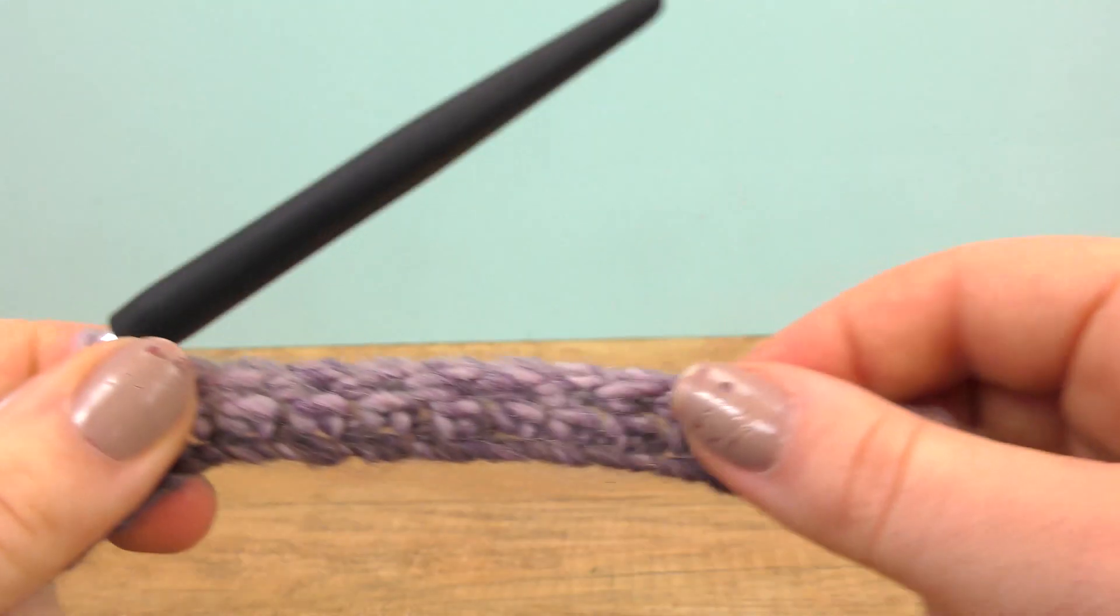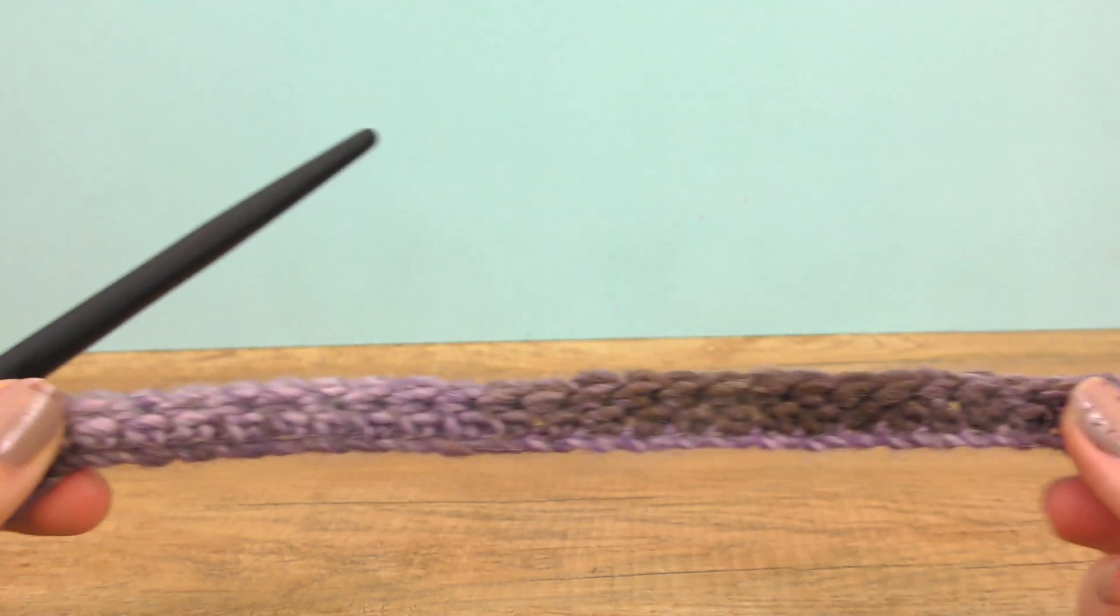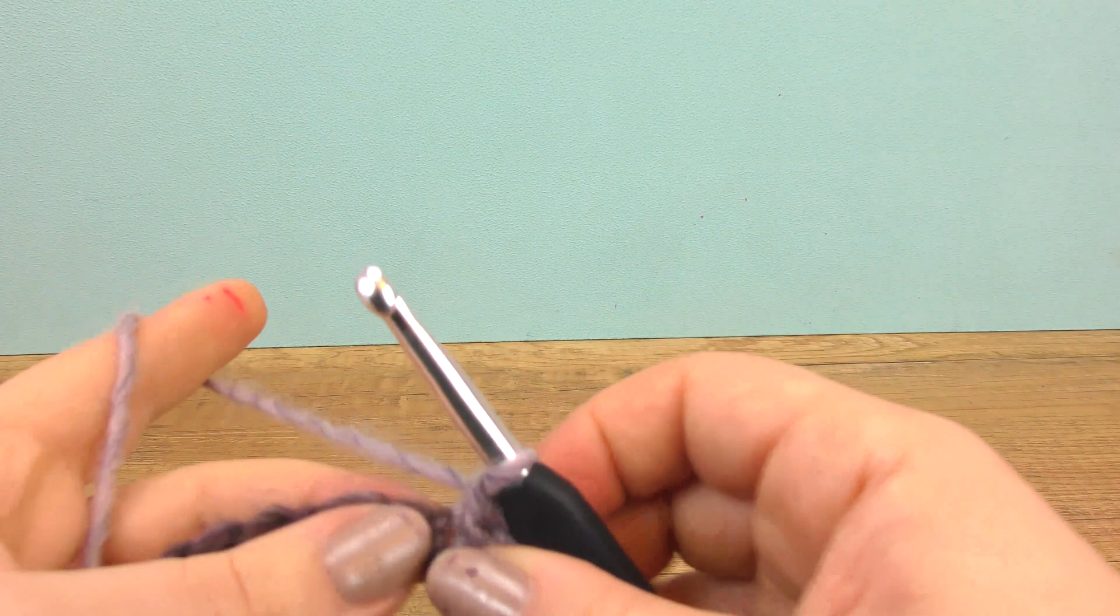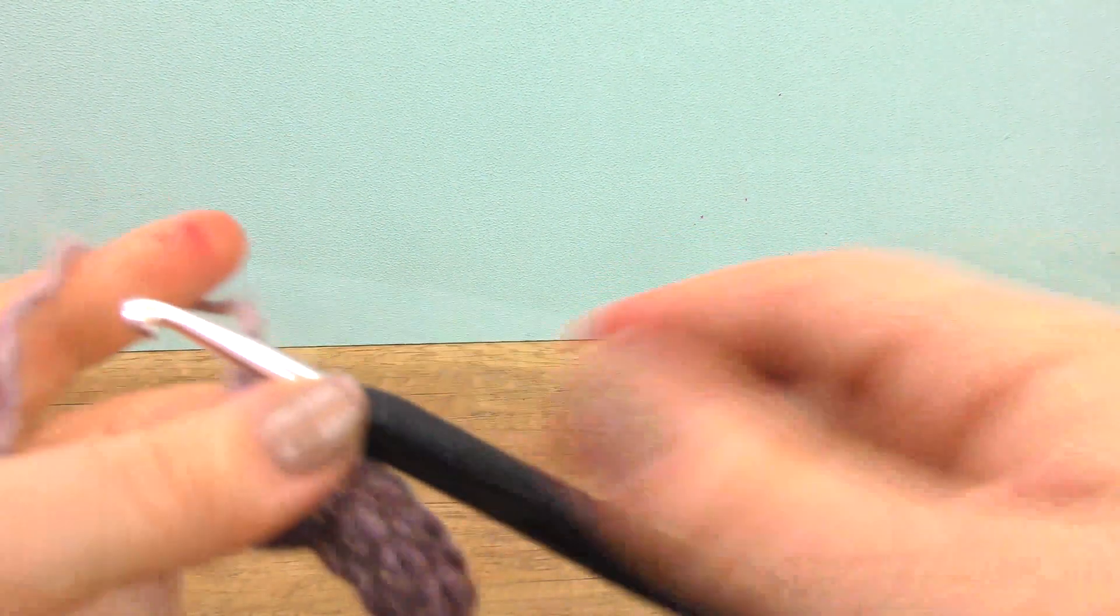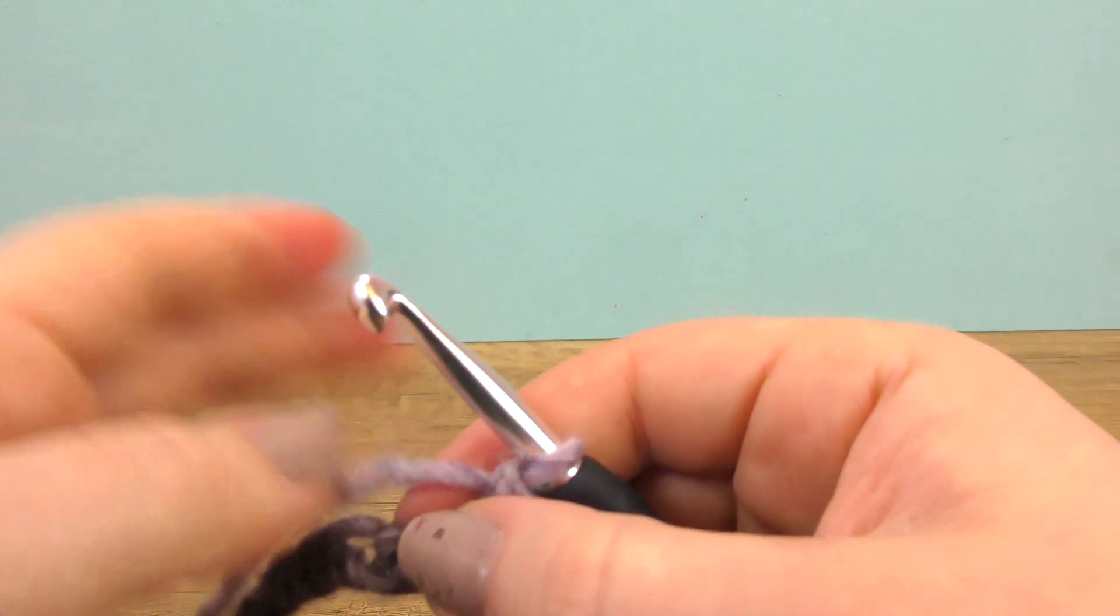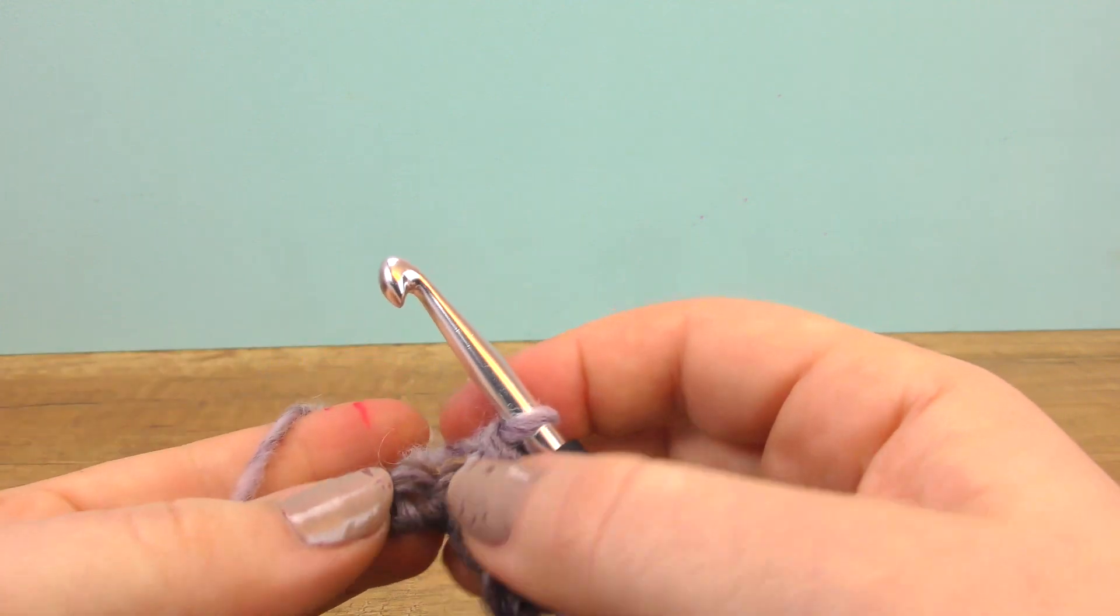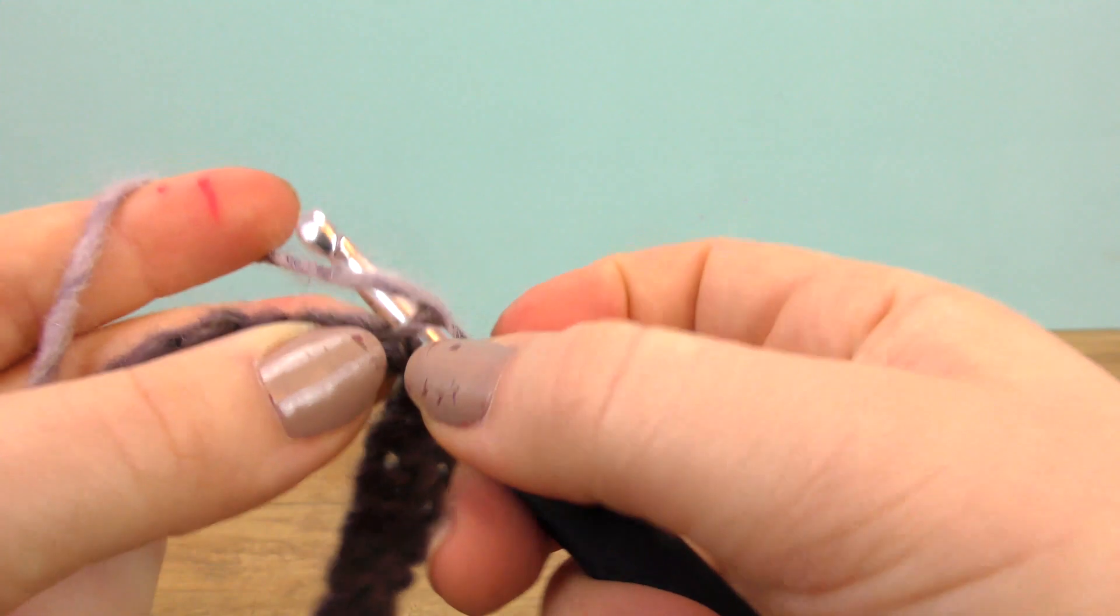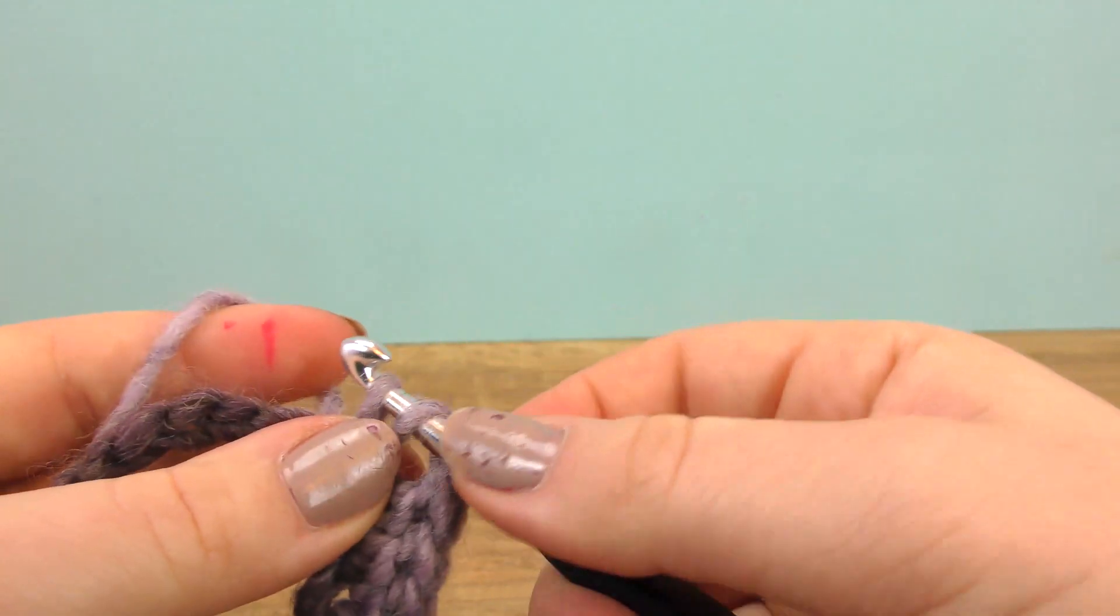Now that we did this, you should have a base that looks something like this. We can then continue in chain 26. A half treble is what we do now. Take the yarn over the needle, go through the chain, take the thread through, pull it through all three loops that were sitting on the needle.